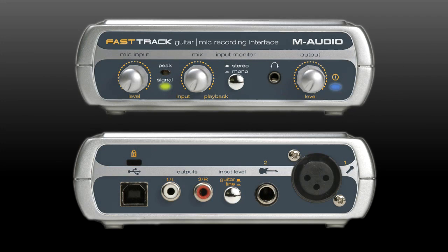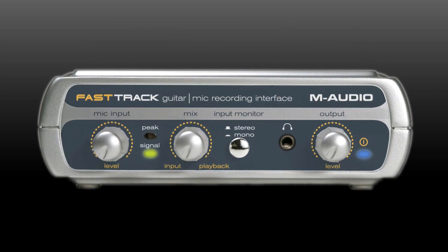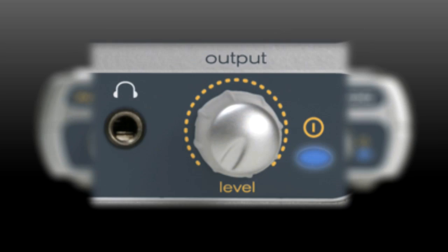Before you start recording with the Pro Tools Recording Studio, you need to connect your gear to the M-Audio FastTrack USB audio interface. Plug your headphones into the jack on the front of the FastTrack labeled with a headphone icon.